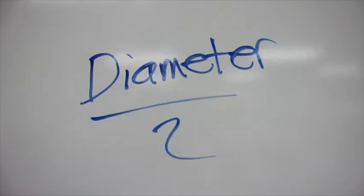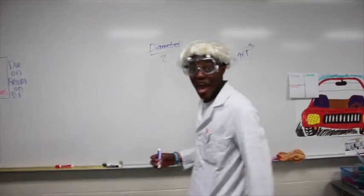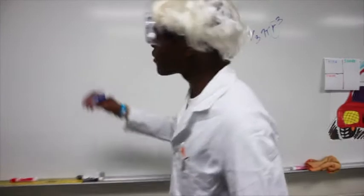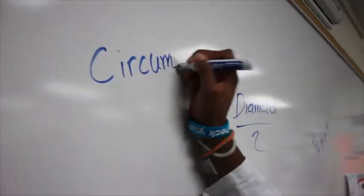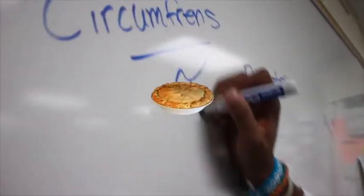You may be thinking, how do I find the diameter? Well, to find the diameter, you're going to have to divide the circumference by pi.